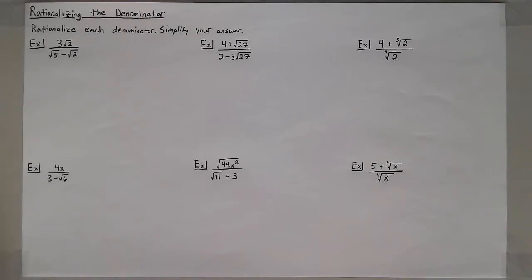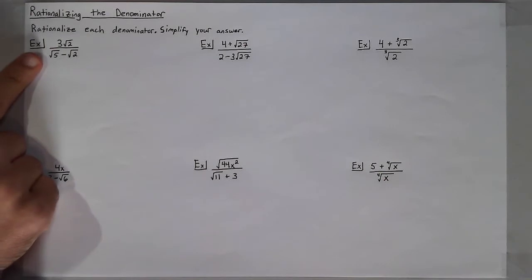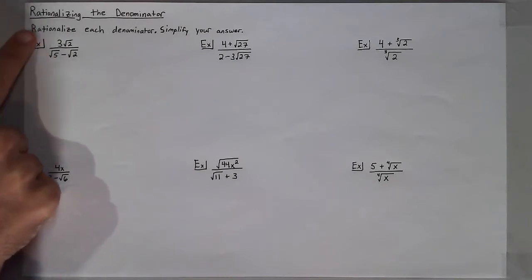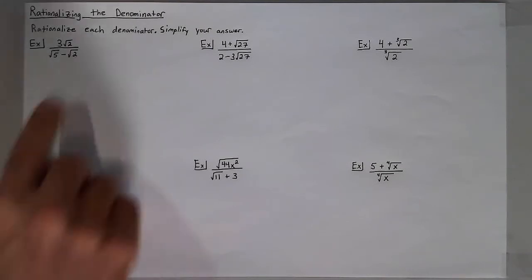In the last lesson, we talked about binomial expressions involving square roots. By multiplying by its conjugate, we can actually get rid of the square root, thus rationalizing the denominator because there will no longer be a radical in the denominator.